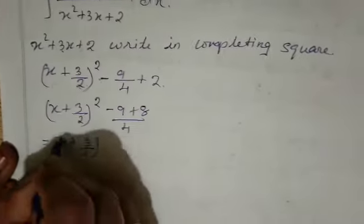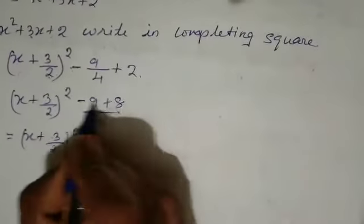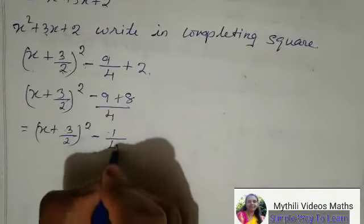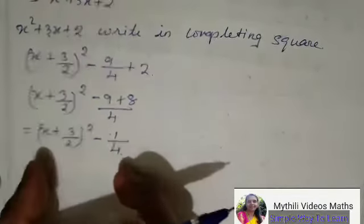So this is equal to x plus 3 by 2 whole square and then just subtract these two values, that is minus 1 divided by 4. So this is your completing square.